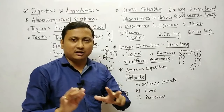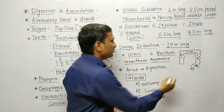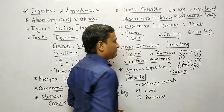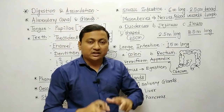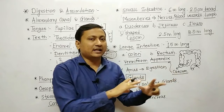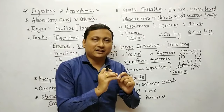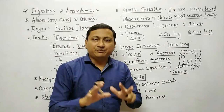The rectum stores undigested food for a temporary period of time. Between the small and large intestine is a small pouch called the caecum. This caecum contains a worm-like structure known as the vermiform appendix. The vermiform appendix is present in our body as a vestigial organ — it is a functionless, inactive organ. However, the vermiform appendix is active in herbivorous animals like elephants, where it is responsible for digestion of cellulose.